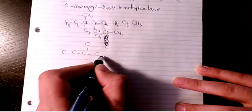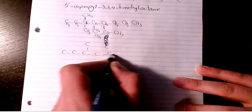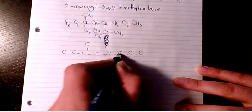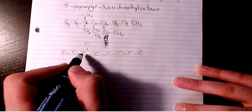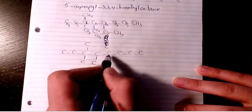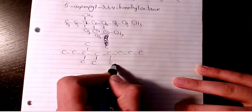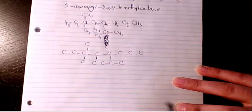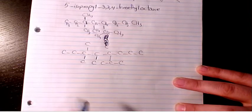So if I want to write it a little bit more clear: one, two, three, four, five, six, seven, eight carbons. The third and fourth positions have methyl groups, and in the fifth position we have isopropyl like that.